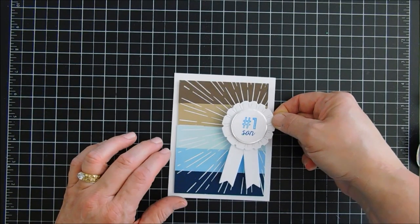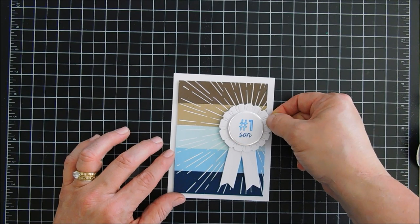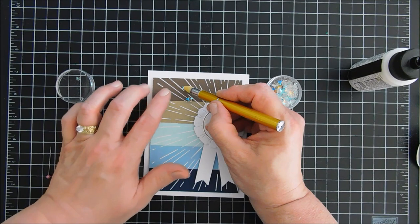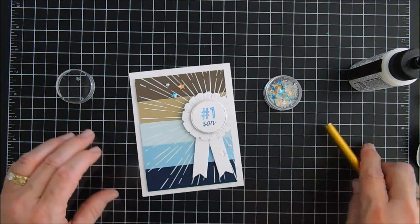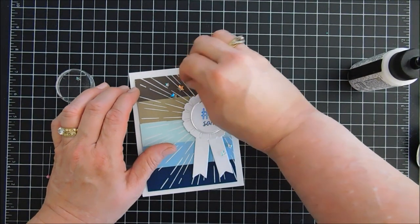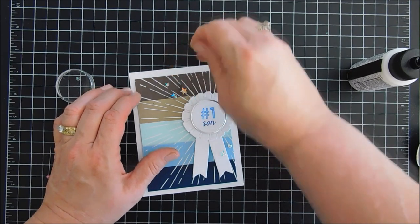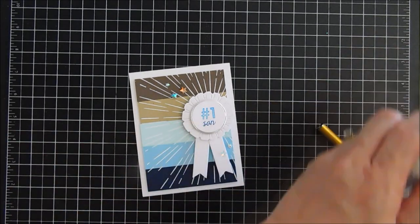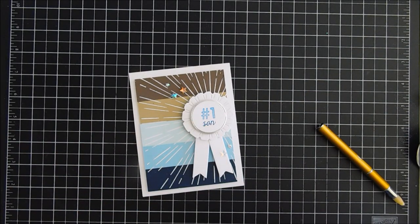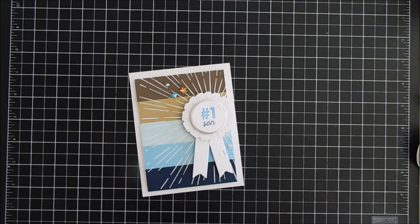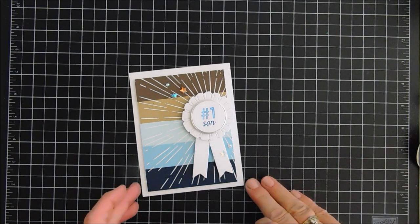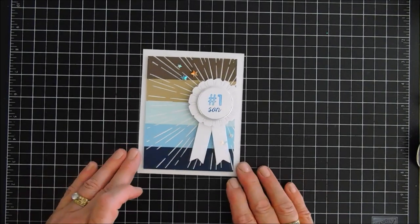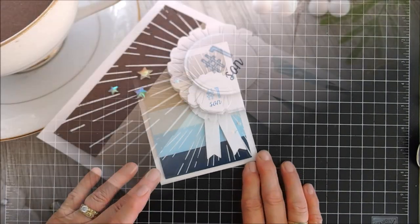And this is going to go directly over the circle that is on our sun ray. Love the way this looks. Kind of a very simple card but definitely a masculine card, I would say. And you guys could switch it up and create a feminine card if you wanted to by switching out the colors. I'm going to add a few of the Studio Katia iridescent stars just for a little extra something, and then that finishes my card for Try It Out Tuesday. Thanks for joining me. Have a lovely day. We will see you soon. Bye.